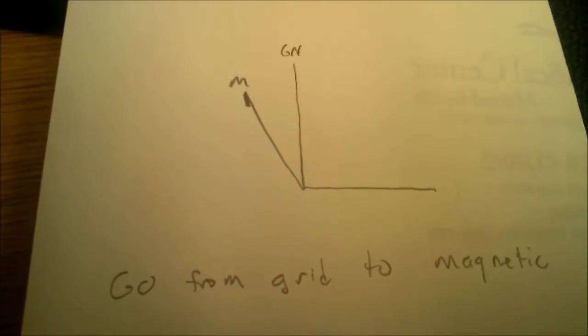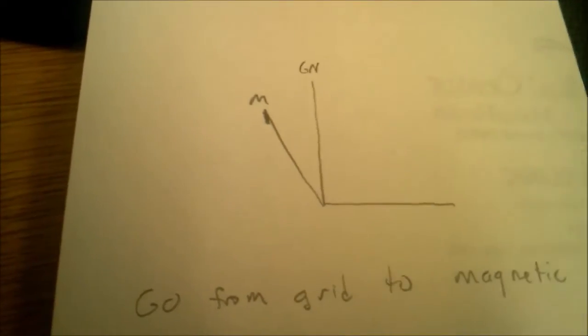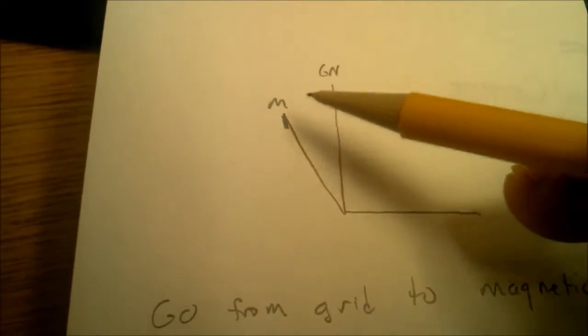Let's say we want to go from grid north to magnetic north. We want to translate or take an azimuth from grid and plot it onto our compass.